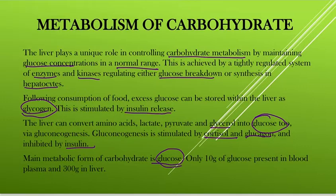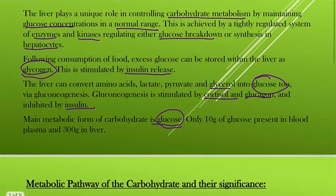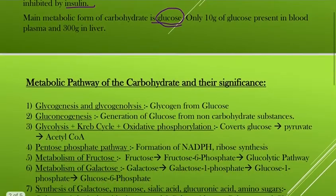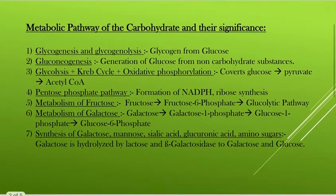The main metabolic form of carbohydrate is glucose. There is mainly only 10 grams of glucose present in blood plasma, and 300 grams present in the liver in the form of glycogen.